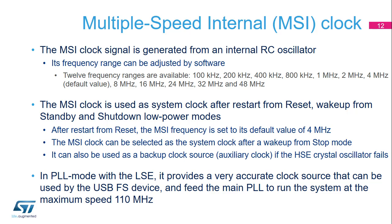The MSI is generated from an internal oscillator. Its frequency is programmable from 100 kHz to 48 MHz. This is the default clock source after a reset and wake-up from standby and shutdown low-power modes. The MSI can be selected as the clock at wake-up from stop 0, stop 1, or stop 2 modes, and as a backup clock if an HSE failure is detected by the clock security system. In addition, when used in PLL mode with the LSE, it provides a very accurate clock source, better than ±0.25% accuracy, that can be used by the USB FS device and feed the main PLL to run the system at the maximum speed of 110 MHz.